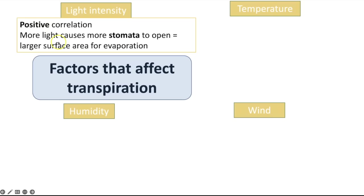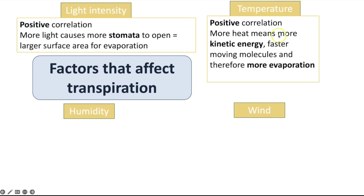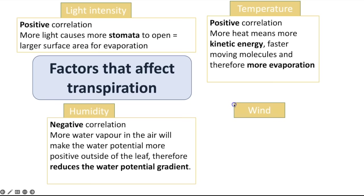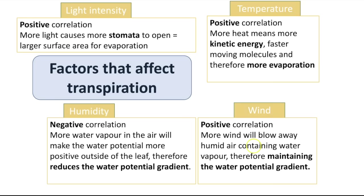There is a negative correlation between humidity and transpiration rate — more water vapour in the air makes the water potential more positive outside the leaf, reducing the water potential gradient and transpiration. There is a positive correlation with wind — more wind blows away the humid air containing water vapour, helping to maintain the water potential gradient and increasing transpiration.